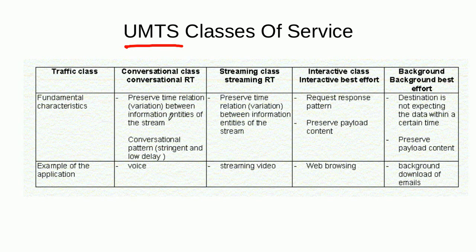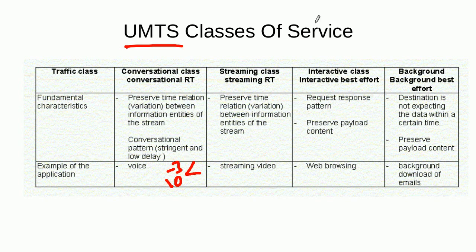In the conversational class, it is important to preserve the relationship between the information received from the network. The frames or packets must not have variable delay — some arriving earlier and others with more delay — because that would make it difficult to reconstruct the voice. There is a constraint on delay, and we can tolerate some bit errors, but they must be less than 10 to the power of minus 3, meaning 1 in 1000 bits can be in error without significant degradation in voice quality.